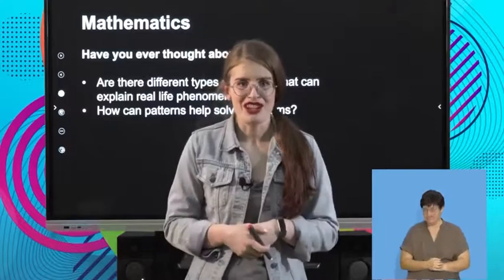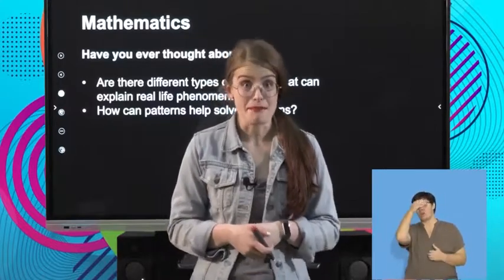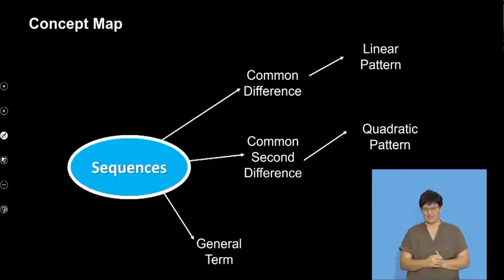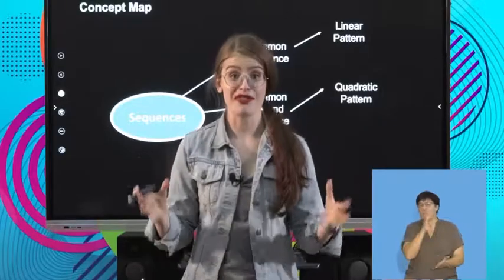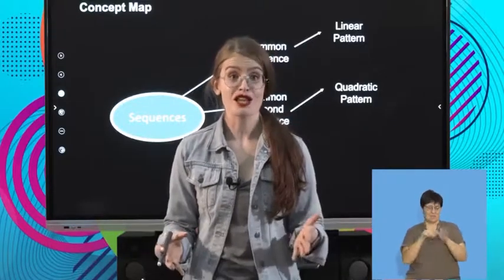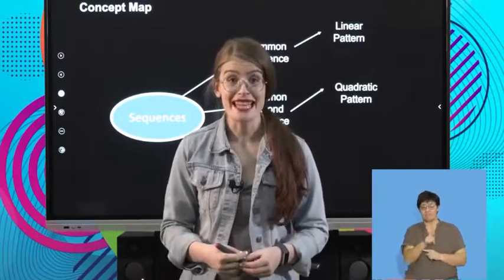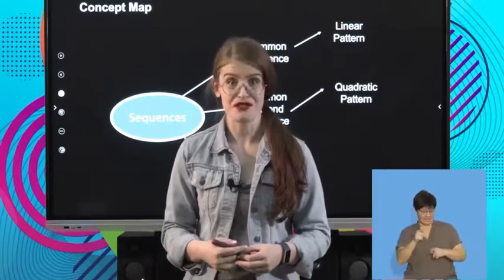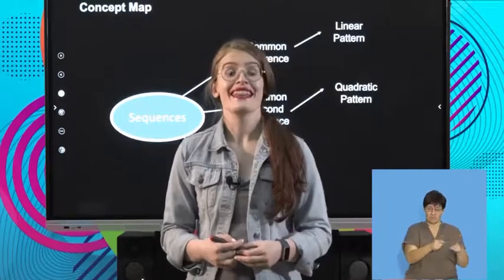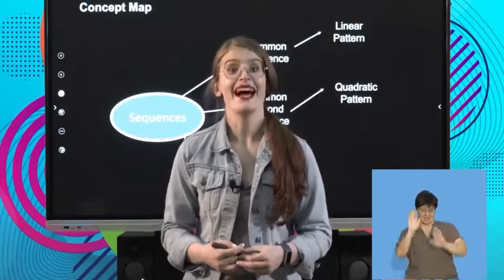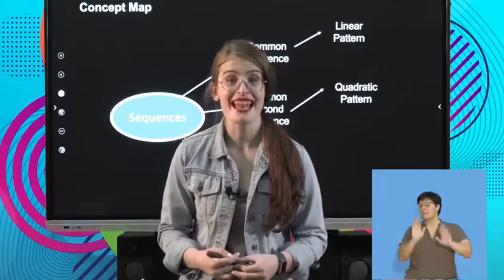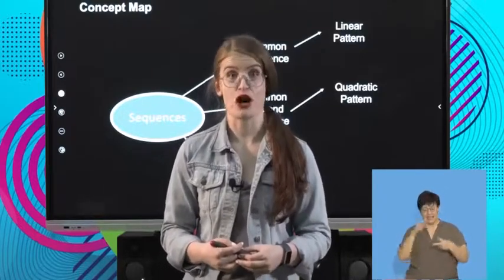So, let's have a look at today's concept map. Firstly, I'm going to do a bit of revision on concepts that are relevant to sequences, just to make sure that we're all on the same page. Then, I'm going to revise the definition of a linear pattern where the first differences are equal. Then, I'm going to introduce the concept of a quadratic pattern, where the second differences are equal.